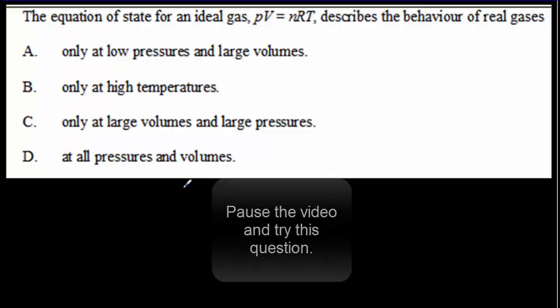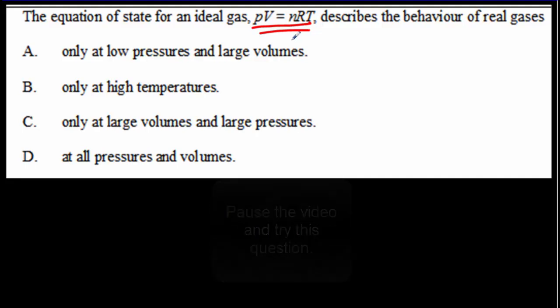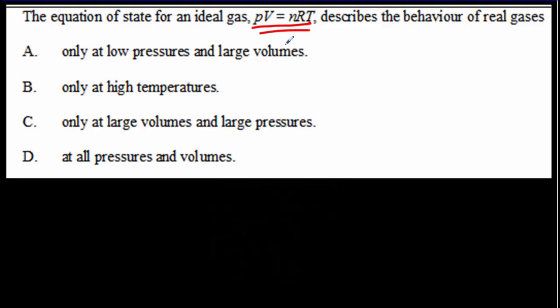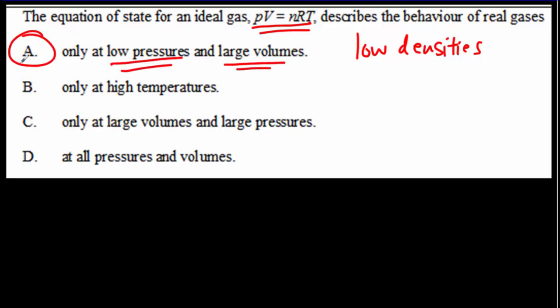Here's a review question about when we can apply the ideal gas law. We can only apply that law when we don't have significant electrostatic interactions between the molecules — basically, they've got to be well spaced, so we want low densities, corresponding to low pressures and large volumes. A is the correct answer. Also, your temperature should be somewhat moderate, because if a gas gets too hot, it begins to ionize and you won't have an ideal gas anymore.